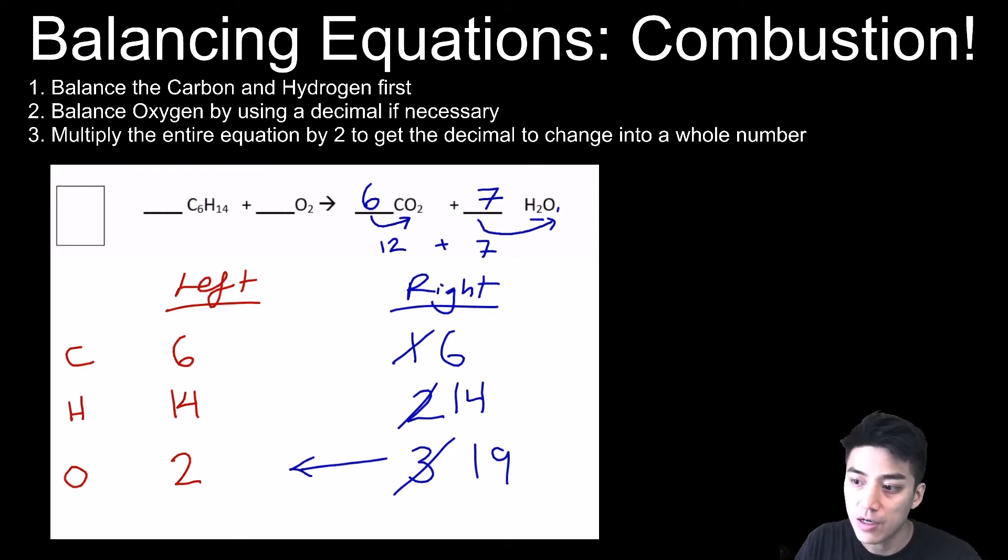Now we bounce back over to the left and ask yourself, what times two could possibly give us 19? The only number that can do that is 9.5. 9.5 times two will give me 19 oxygens.